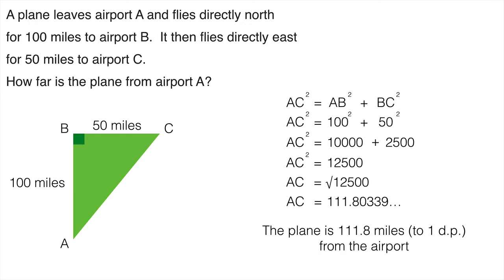Now we can round that to one decimal place. And for questions such as this we usually finish with a little sentence. So the plane is 111.8 miles from the airport. And just remember to include that, to one decimal place. Thank you.